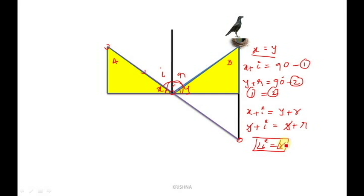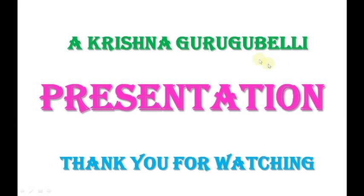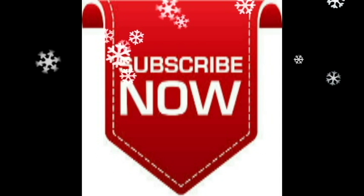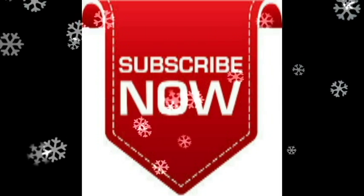Similarly, the angle of incidence, angle of reflection, and normal ON all lie in the same plane PQ — the reflecting plane. That is why the second law of reflection is also proved by Fermat's principle. So, Fermat's principle states that light is always in a hurry and always chooses the shortest path.